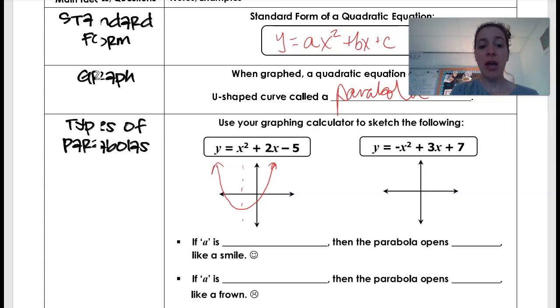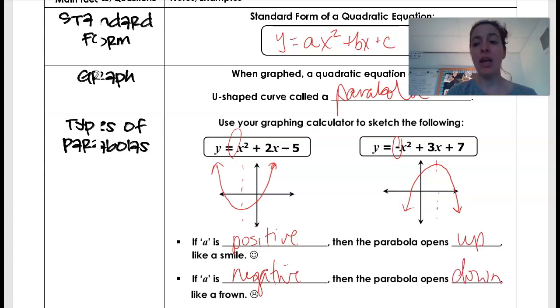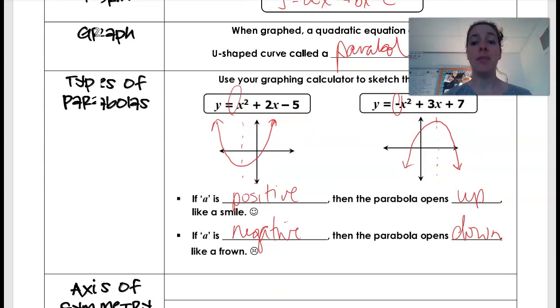So if a, remember a is that value in front of my x squared. If a is positive, then the parabola opens up. So it's a smile. So if that's positive, it opens up. And if we see on this one, when we graph that one using Desmos or our graphing calculators, it looks something like this. And I see that that a value is negative in very front. So that tells me that it's going to be negative and that it opens down. Okay, so those are really two that we're going to be looking at. And we can always tell that based on that a value.